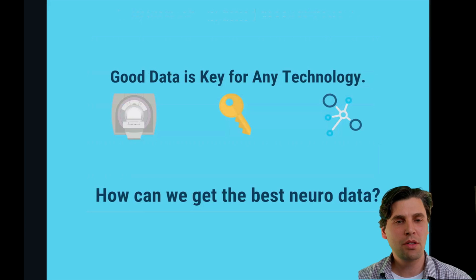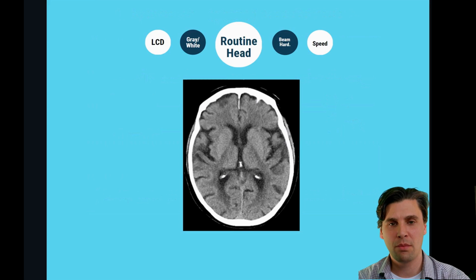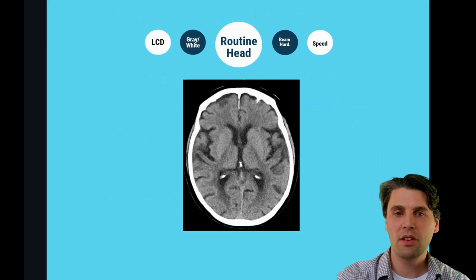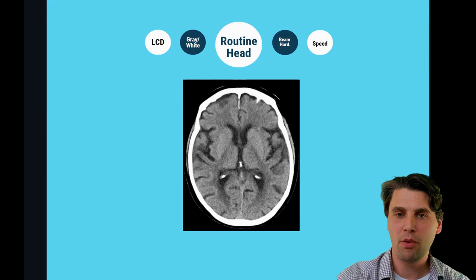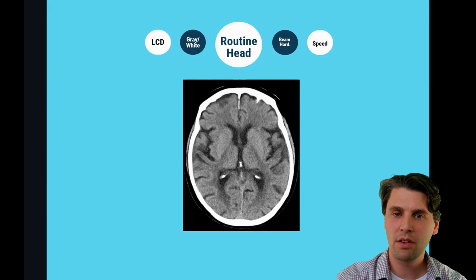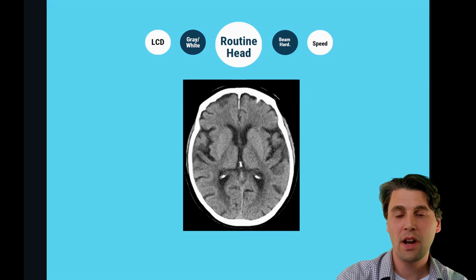What we're going to go through here first is how do we get good data that's going to be input for our algorithm development. We're going to talk about for head CT scanning, what's the best CT platform to acquire the data so that we can best have data to train our models and use as input to our models. So we're going to talk about the different applications for head scanning.